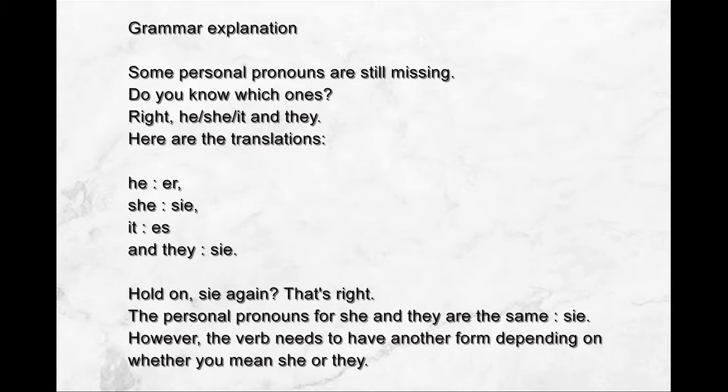Some personal pronouns are still missing. Do you know which ones? Right. He. She. It. And they. Here are the translations. He — depending on whether you mean she or they, the verb needs to have another form.